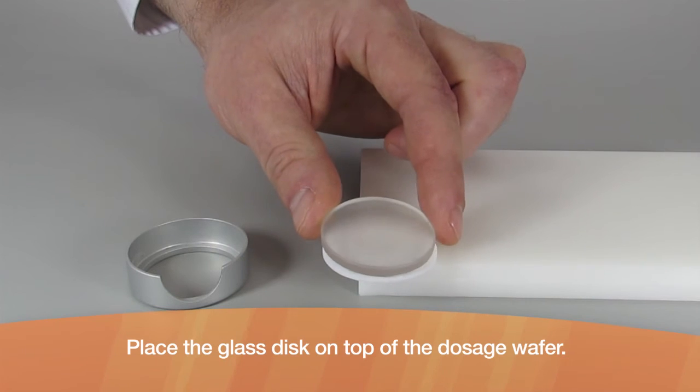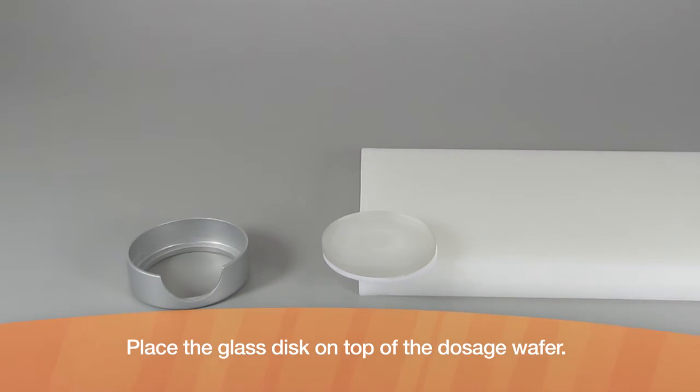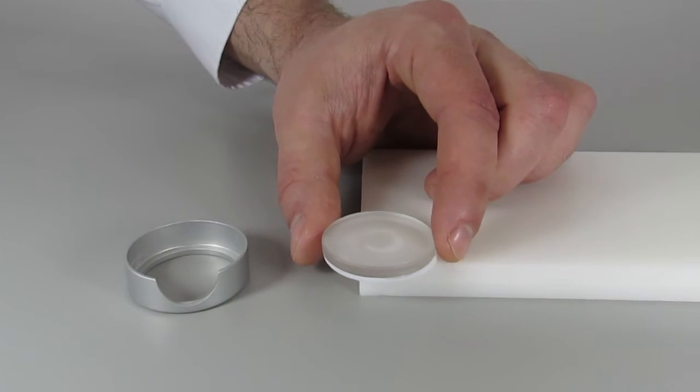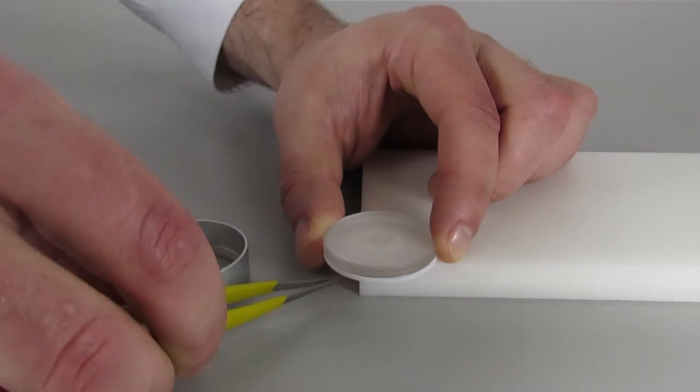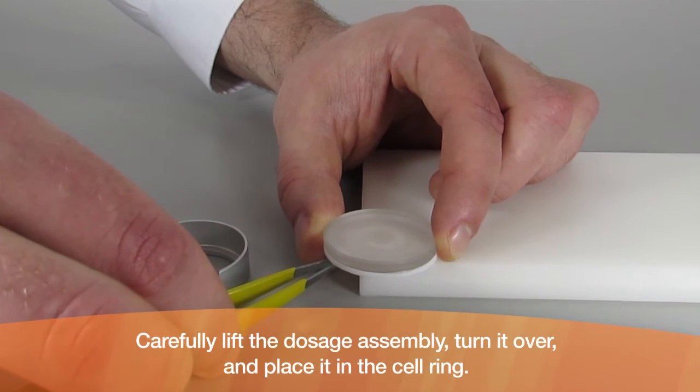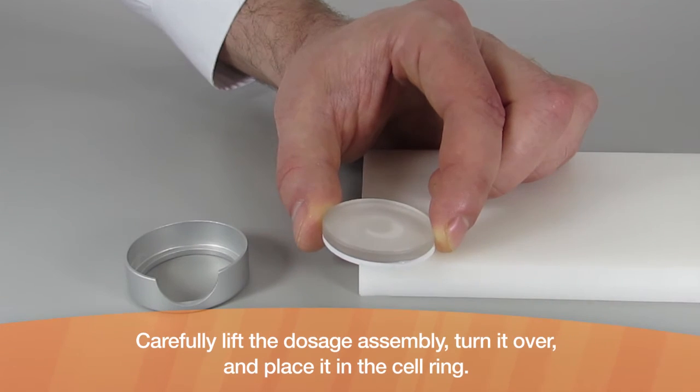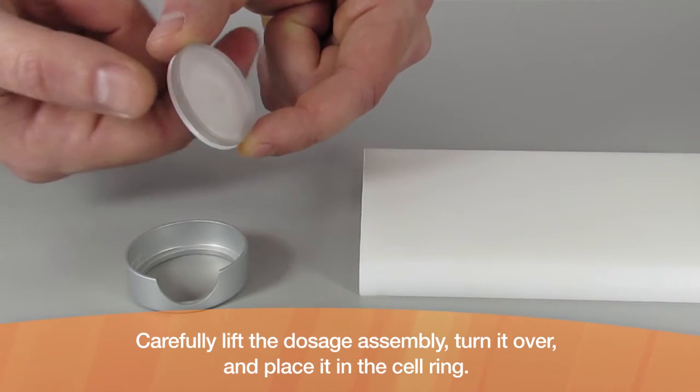Place the glass disc on top of the dosage wafer. Carefully lift the dosage assembly, turn it over, and place it in the cell ring.